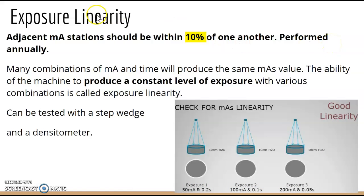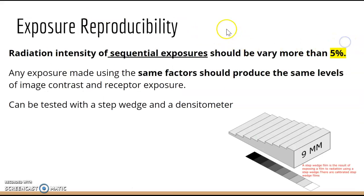Linearity tolerance is 10%. Reproducibility means radiation intensity of sequential exposures should not vary more than 5%. Any exposure made using the same technical factors should produce the same levels of image contrast and receptor exposure.